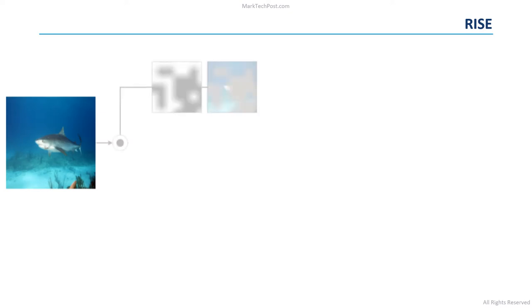So, the image is masked by preserving only a subset of its pixels. Note that the mask is not binary, but it has values between 0 and 1.